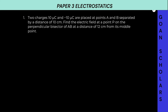Our first problem says: two charges, 10 micro coulomb and minus 10 micro coulomb, are placed at points A and B separated by a distance of 10 centimeters. So let's draw here — here we have 10 micro coulomb and here we have minus 10 micro coulomb. Both are separated by a distance; let's say this is point A, this is point B, and both are separated by a distance of 10 centimeters.